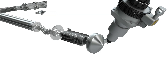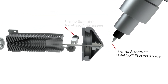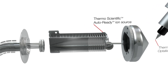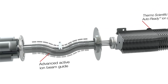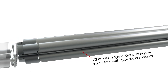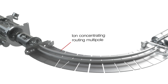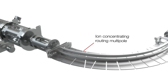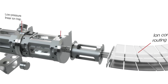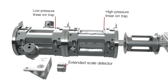The ion flow path in the Stellar Mass Spectrometer begins with a brighter ion source, auto-ready ion calibration, an advanced active beam guide, and quadrupole technology, and finishes with a multifunction ion dissociation and concentration cell, high and low pressure linear ion traps, and an extended scale detector.